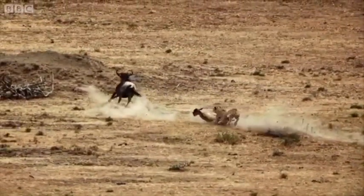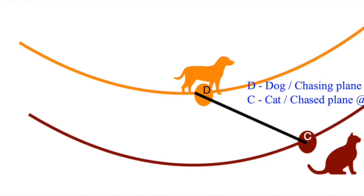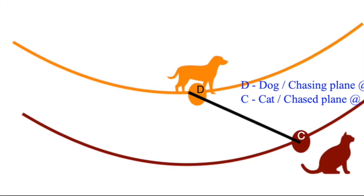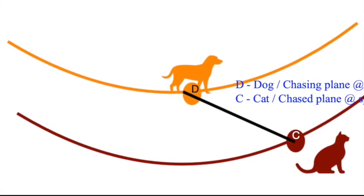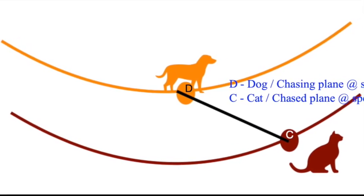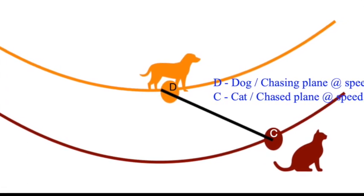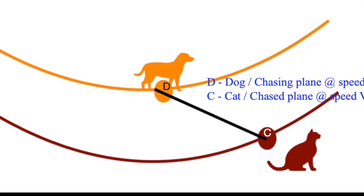Now, on to the notion of pursuit curve, which is a trajectory of a moving point, say D, the dog or the chasing plane, the movement of which at every instant is oriented in the direction of another moving point, say C, the cat or the chased plane. The trajectory of this is called escape curve.